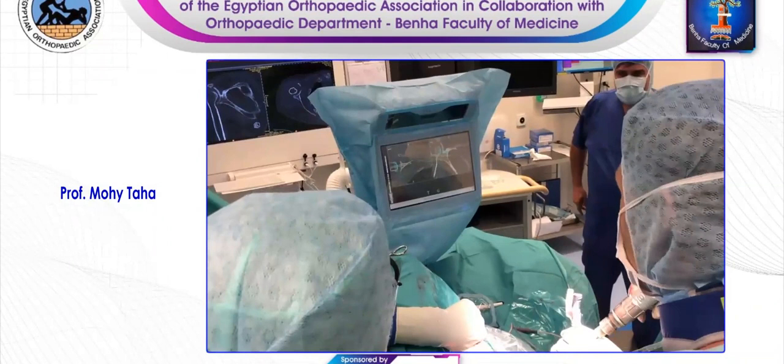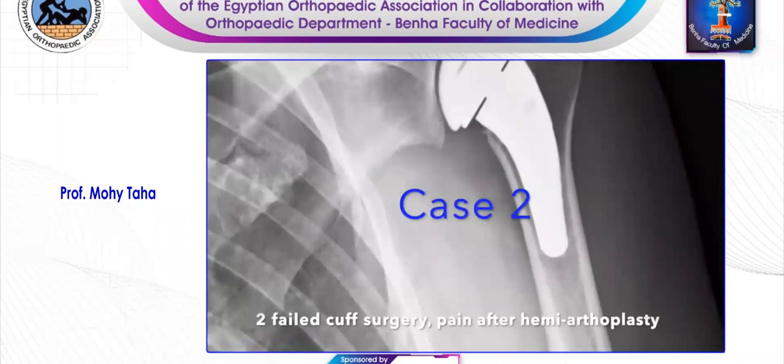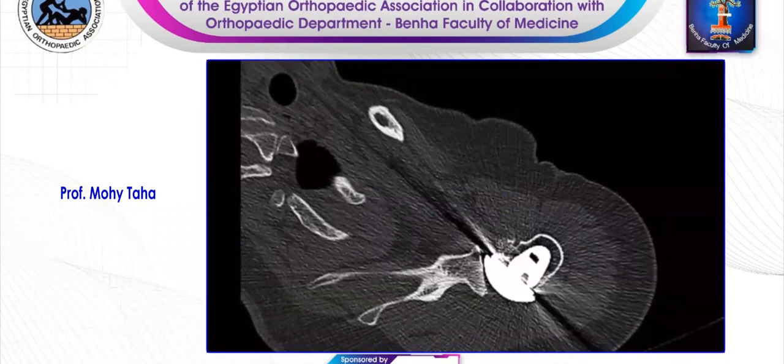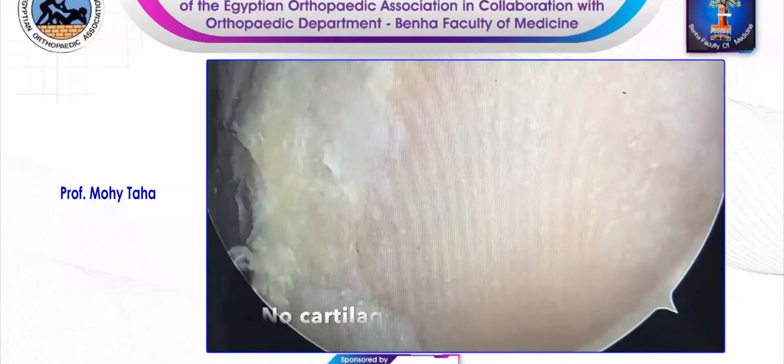This is the intraoperative x-ray, and here you see the postoperative x-ray. I would like to present a case of a 48-year-old female patient with history of two failed cuff surgeries, now with pain and limited range of movement. Subscapularis is gone. If you look at the cartilage from the arthroscopy, it's also gone. So we decided to convert it to a reverse.